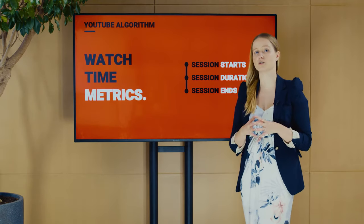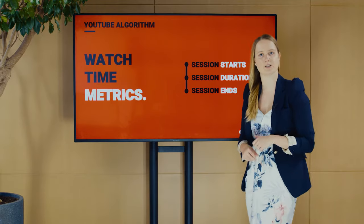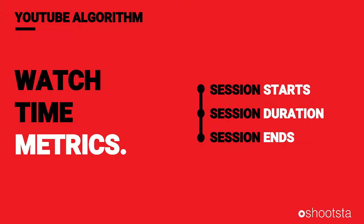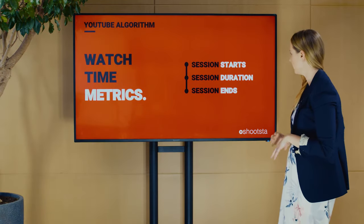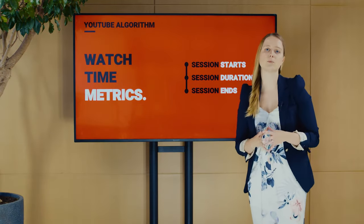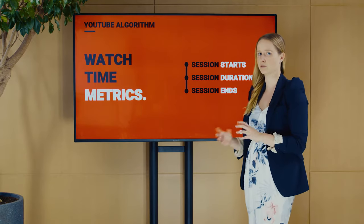To understand how the watch time metric works, let's break it down. It looks at three things: session start — the number of people who begin their YouTube session by watching your video first; session duration — the amount of time people spend on YouTube after watching your video; and session ends — how many people end their YouTube session after watching your content.